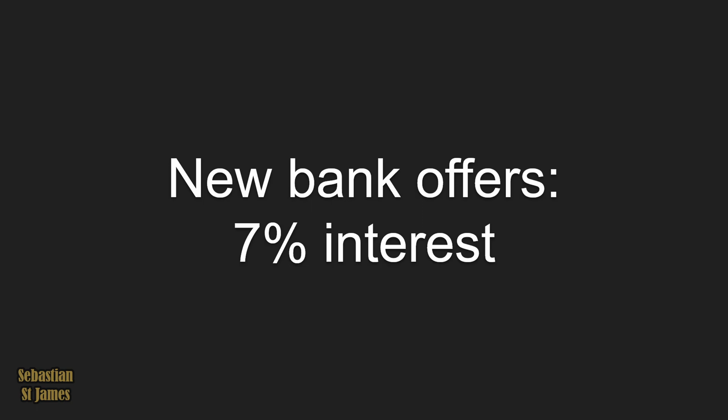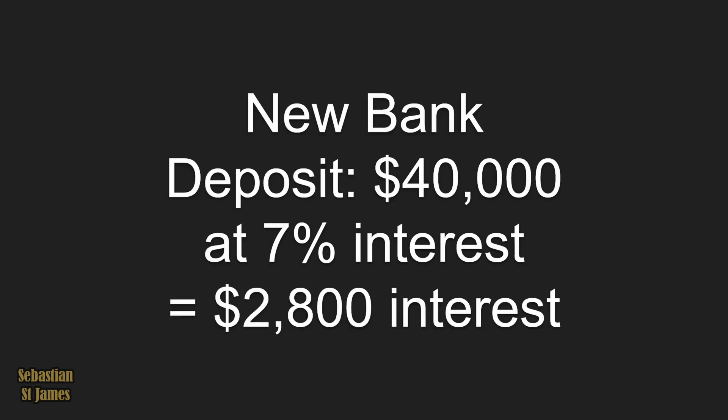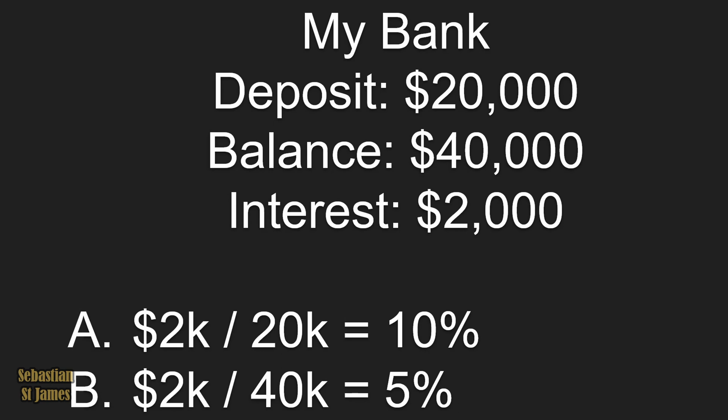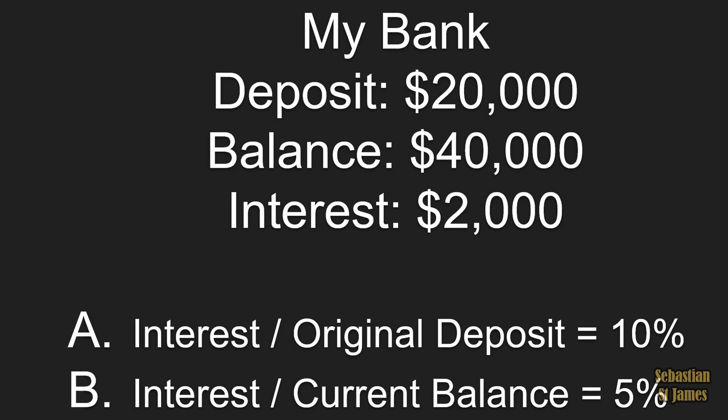In the new bank, you would deposit $40,000 at 7% interest, which equals $2,800. In contrast, my bank — original deposit of $20,000, balance now $40,000 — is offering interest of $2,000. That's either $2,000 divided by the original deposit of $20,000, which equals 10%, or $2,000 divided by $40,000, which is 5%. Do I calculate interest on the original deposit or on the current balance?